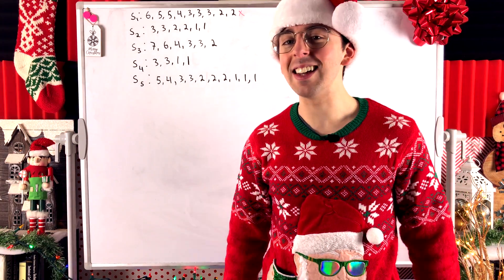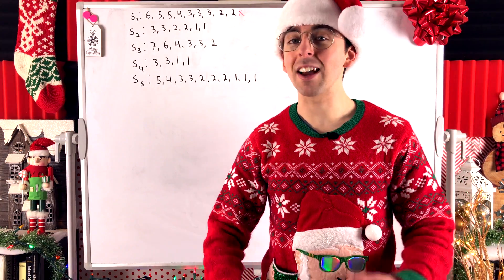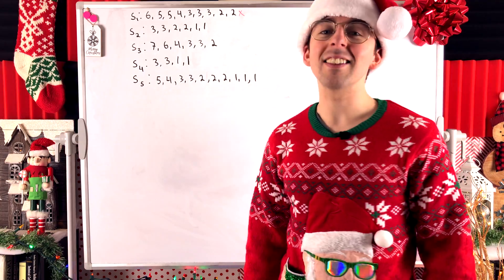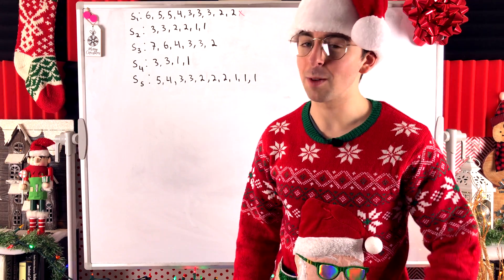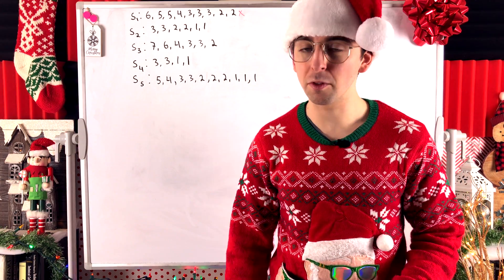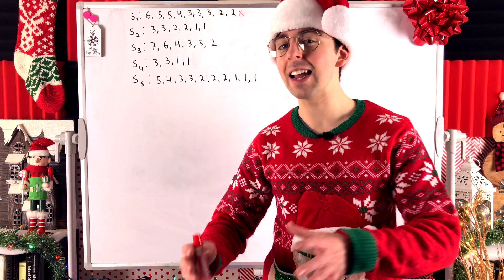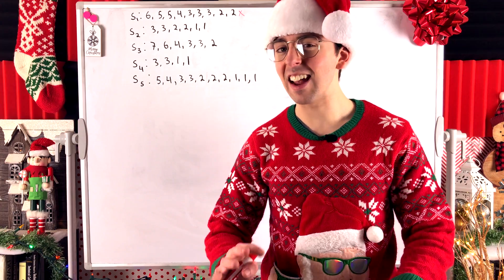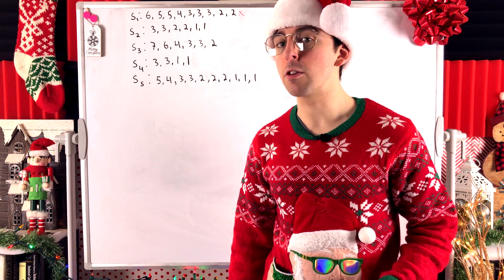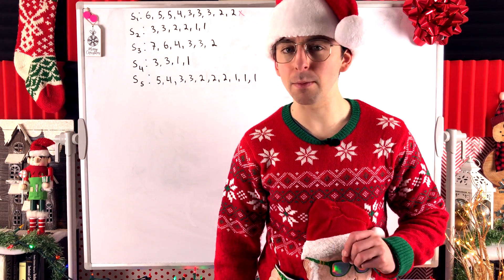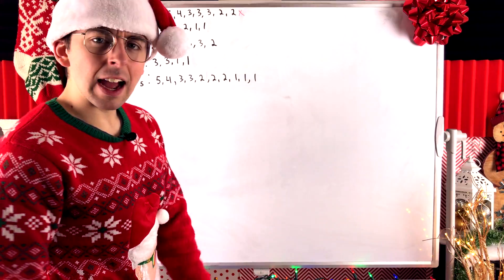This follows from the first theorem of graph theory and a simple corollary stating that every graph must have an even number of odd-degree vertices.